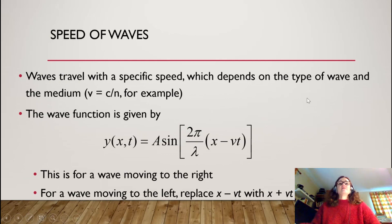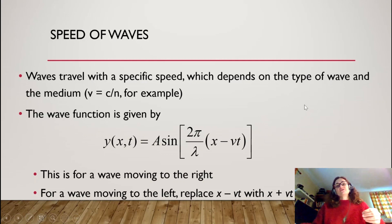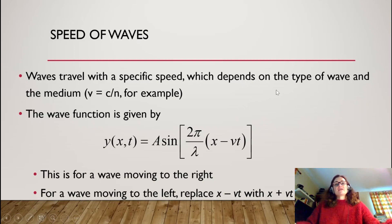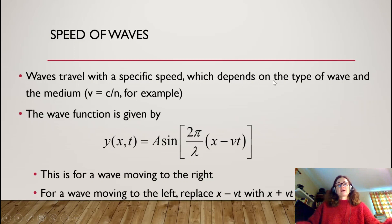Waves travel with a specific speed that depends on the type of wave and the medium. Light in a vacuum travels at 3×10⁸ meters per second; traveling through a medium, the velocity is the speed of light in vacuum divided by the index of refraction. Sound is similar — it has a certain speed in air at a certain temperature, and if the temperature changes, that changes the density of the air, which changes the speed of sound. Sound also has different speeds through different media; for example, the speed of sound in water differs from that in steel.